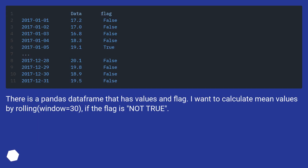Conditional mean by rolling. There is a pandas DataFrame that has values and flag. I want to calculate mean values by rolling window equals 30, if the flag is not true.